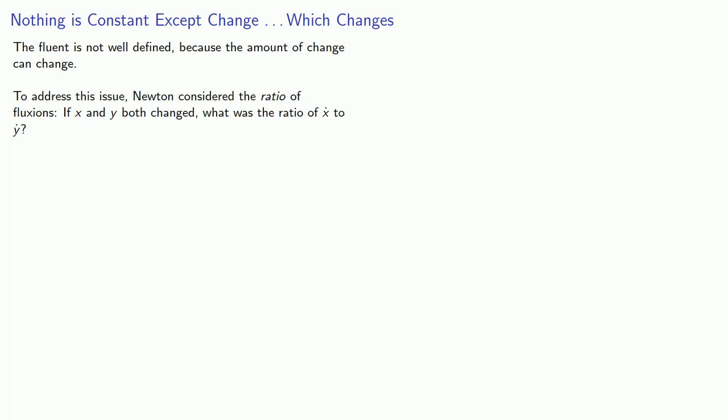If x and y both changed, what is the ratio of dot x to dot y? The result is known as the method of flexions and was developed by Newton in the 1670s.